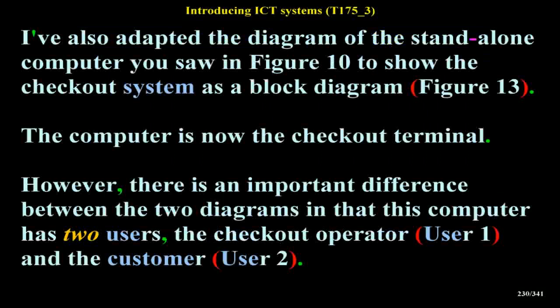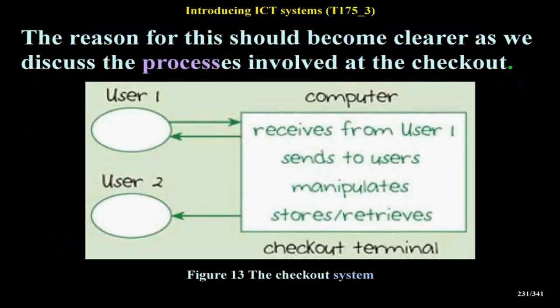I've adapted the diagram of the stand-alone computer from Figure 10 to show the checkout system as a block diagram (Figure 13). The computer is now the checkout terminal. However, there is an important difference in that this computer has two users: the checkout operator (user 1) and the customer (user 2). The reason for this should become clearer as we discuss the processes involved at the checkout.